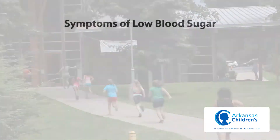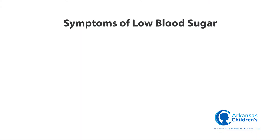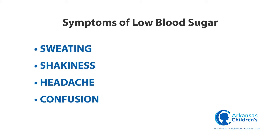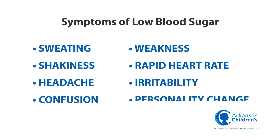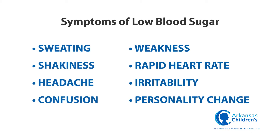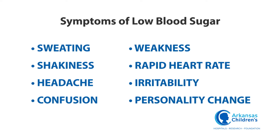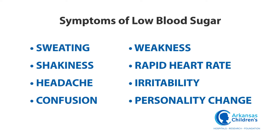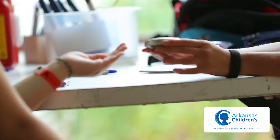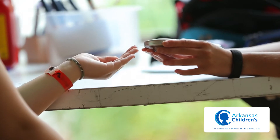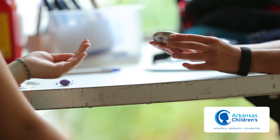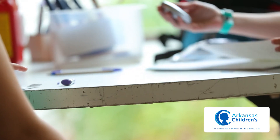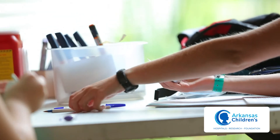Symptoms of a low blood sugar include sweating, shakiness, headache, confusion, weakness, rapid heart rate, irritability, or personality change. Sometimes you may think these are behavior related, but when in doubt, always check the blood sugar. Also, always check the blood sugar prior to treating, regardless.